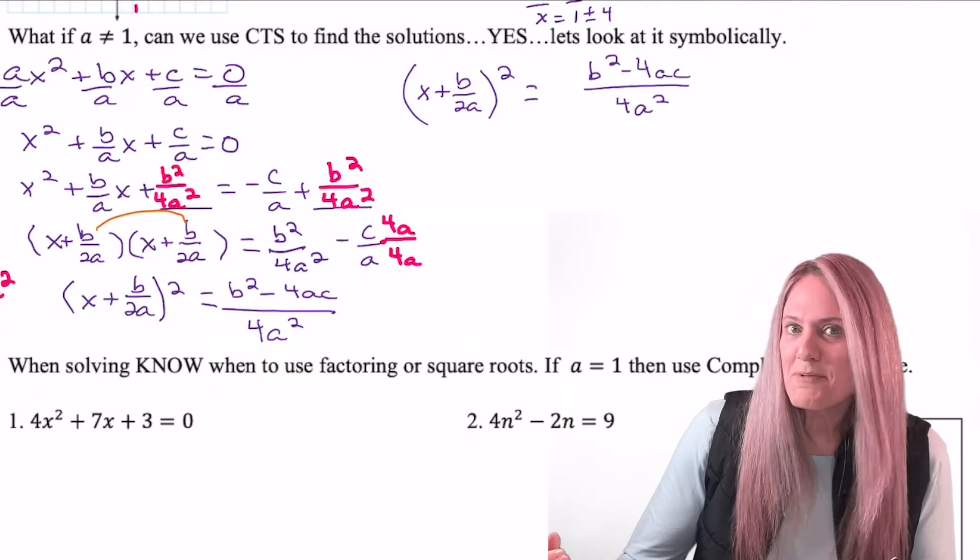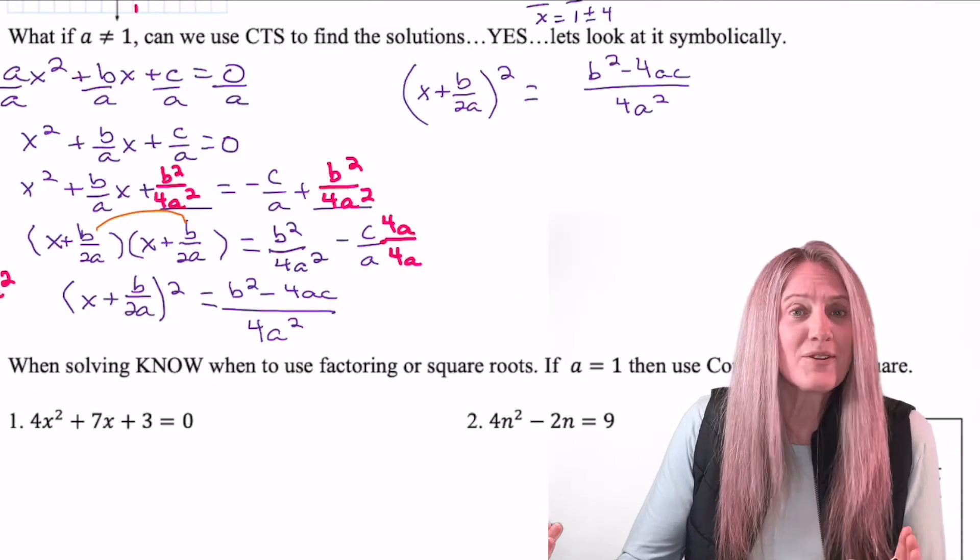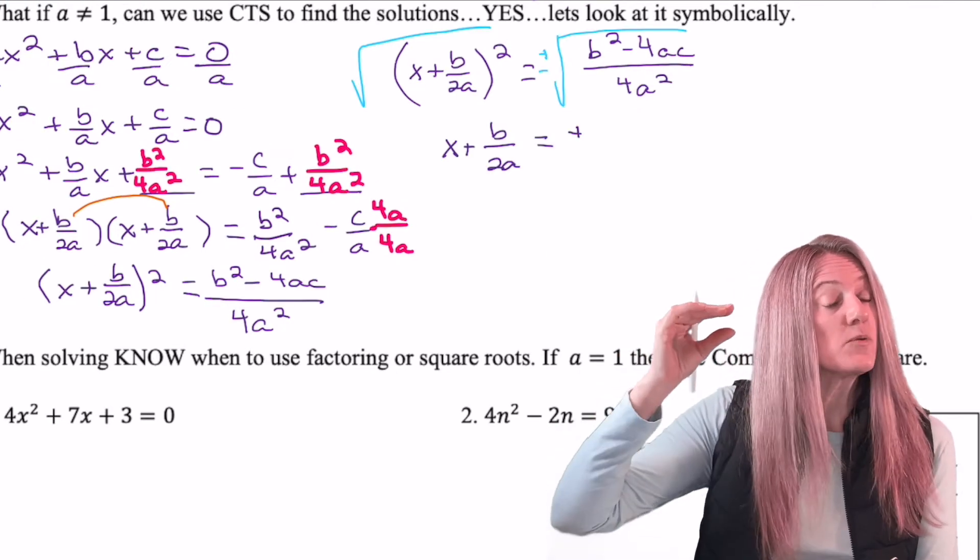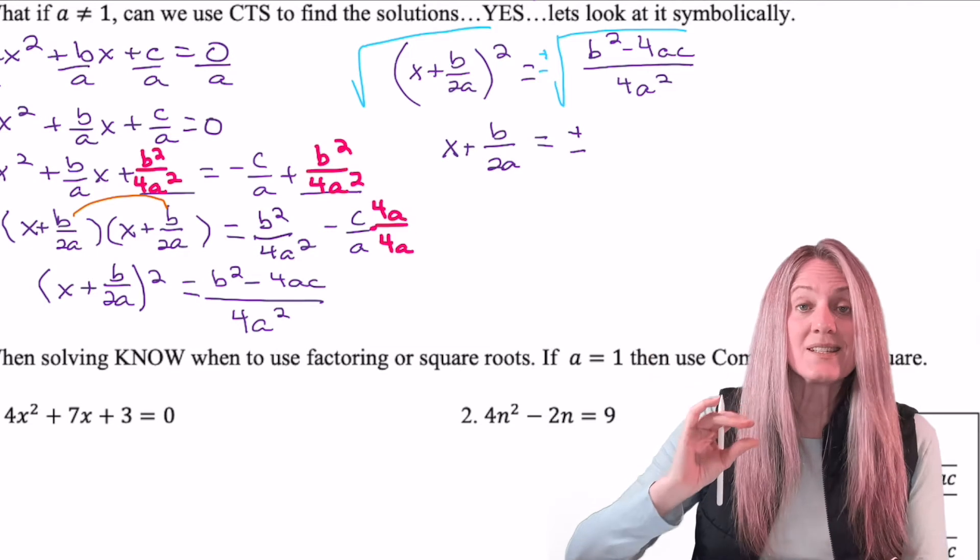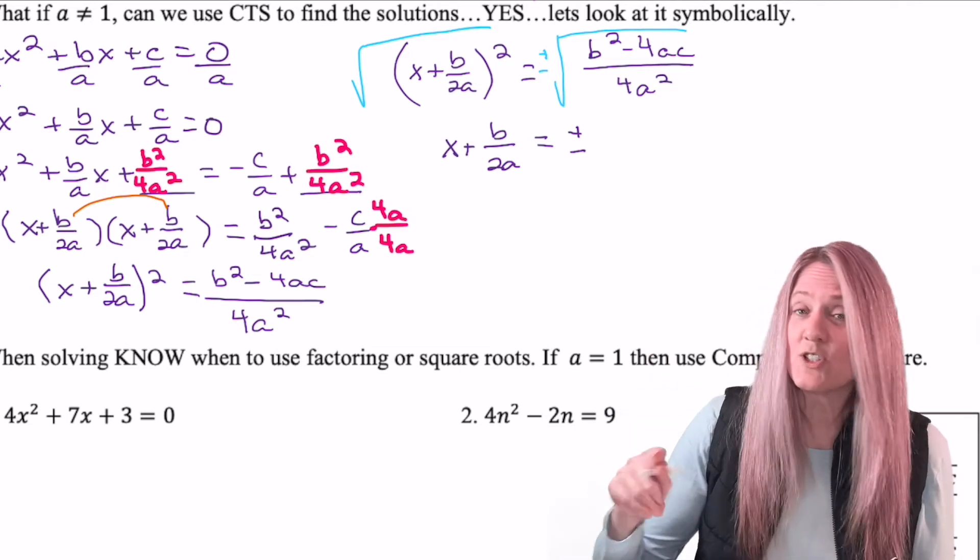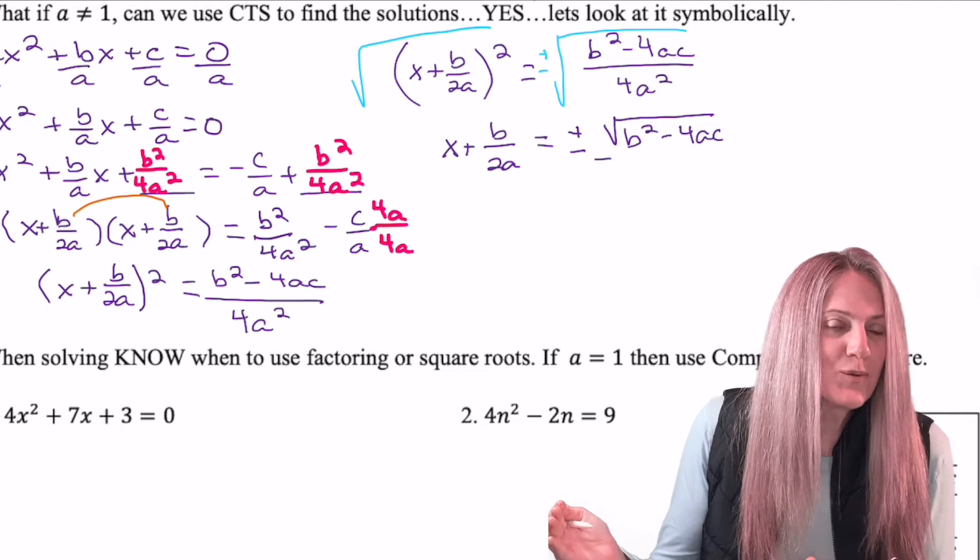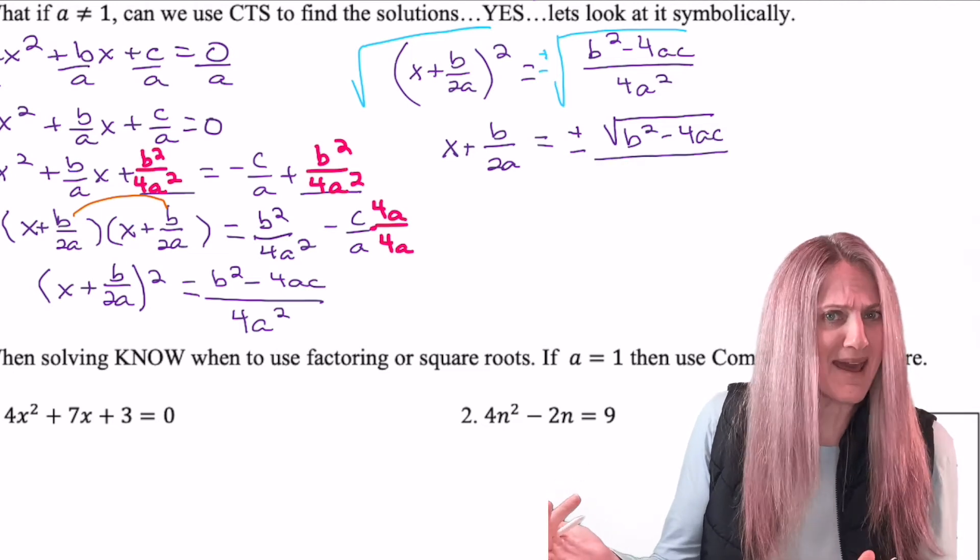I was running out of room, so I had to rewrite the problem. What would I do now? Square root, square root. Square rooting a fraction. I can square root the numerator separate from the denominator. The numerator is a difference. You're not allowed to square root each term. The square root of 4 is 2. The square root of a squared is a. Whew!